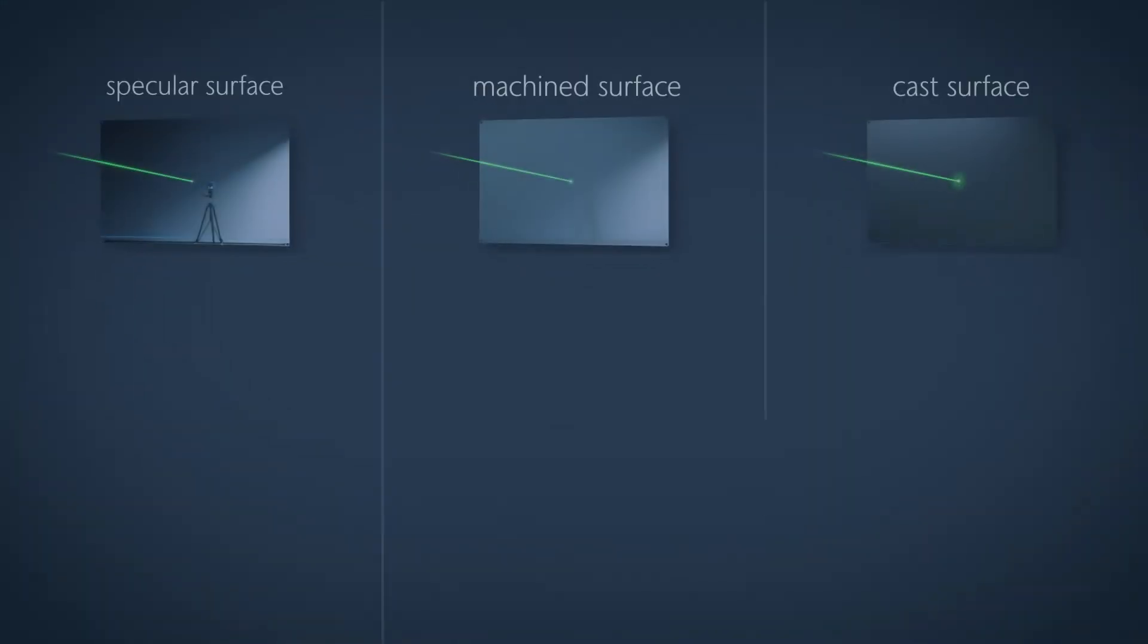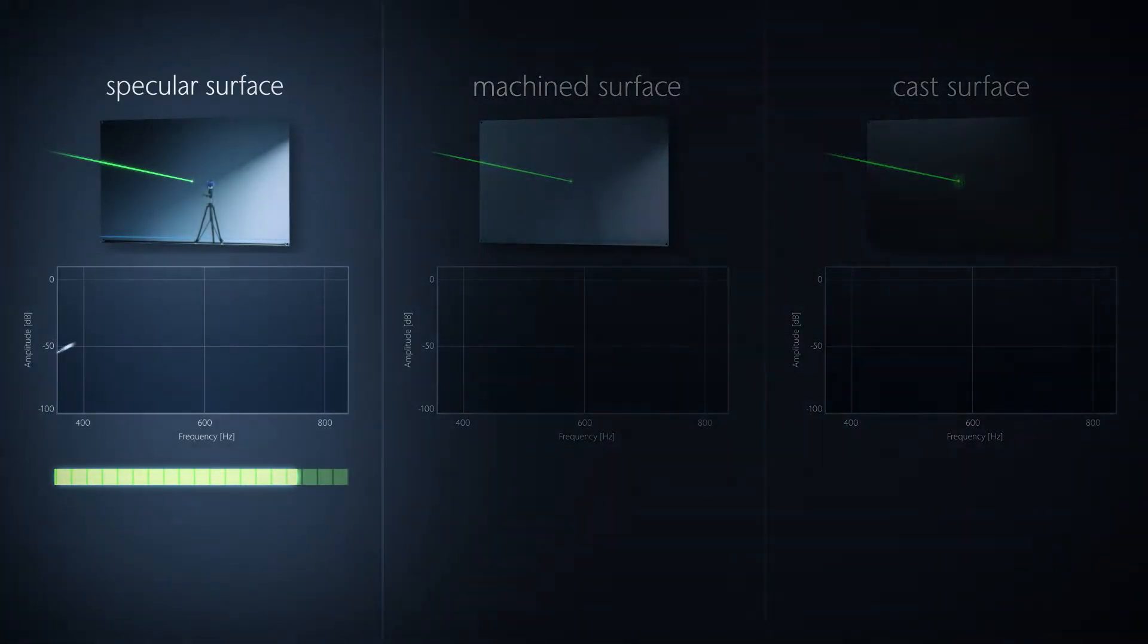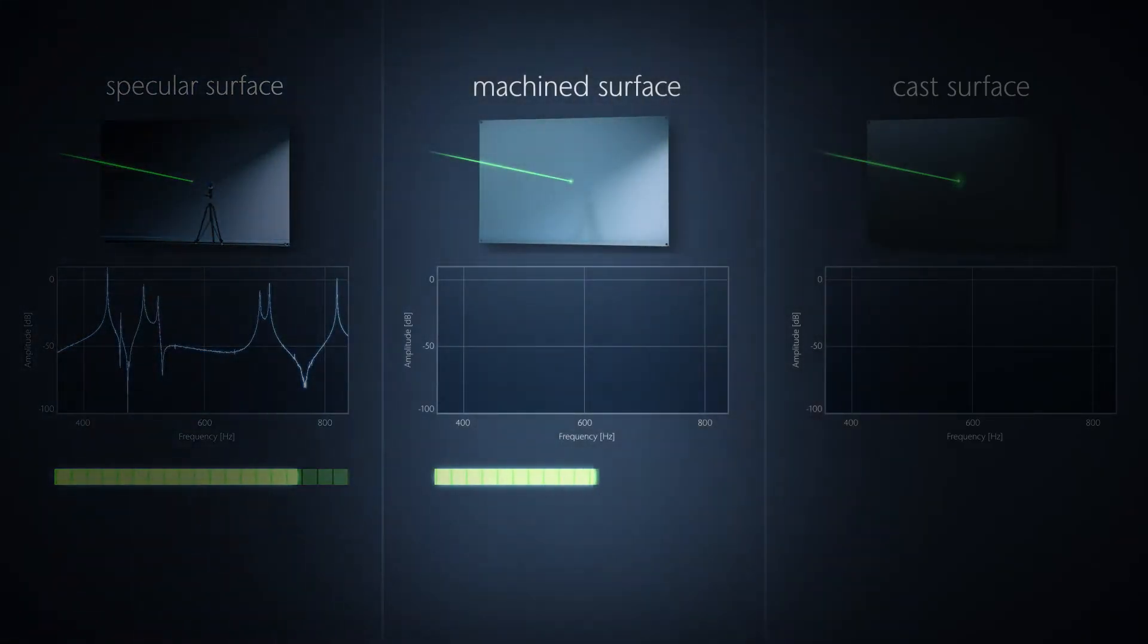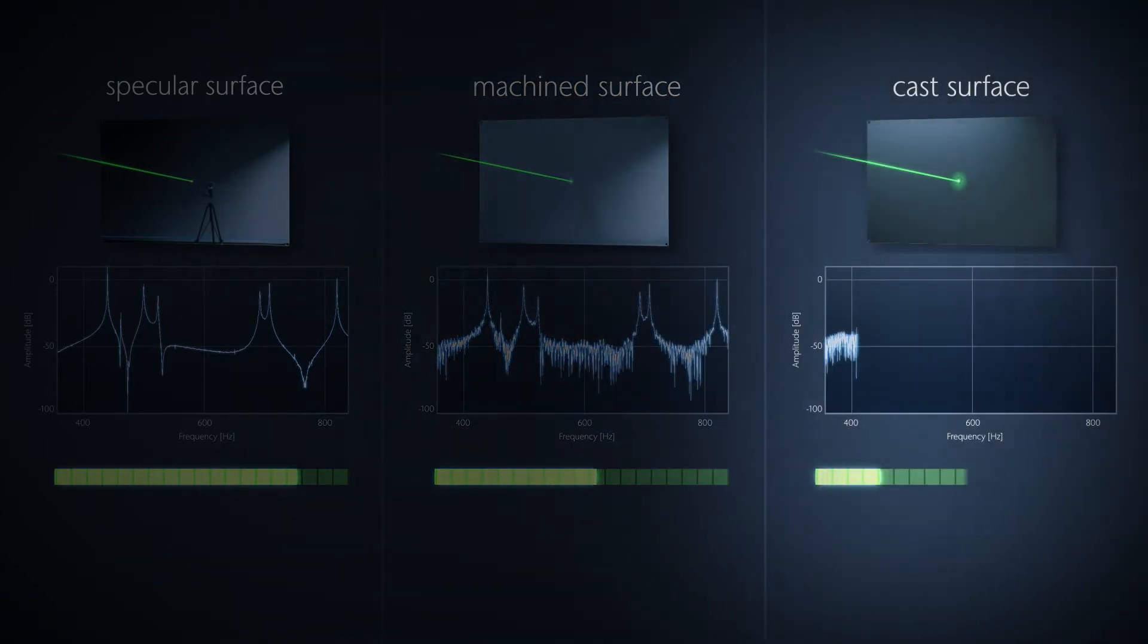The surface determines the spatial distribution of the back scattered light and thus the information that the photodetector can receive from its position in space. The signal-to-noise ratio thus depends on the surface properties.